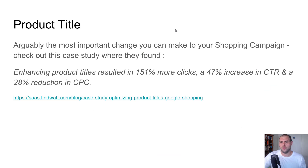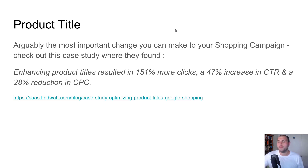Next is the product title — this is so important. It's arguably the most important change you can make to your shopping campaign. I just read through a case study where they found enhancing product titles resulted in 151% more clicks, a 47% increase in CTR, and a 28% reduction in CPC. This was a really big agency that runs Google Shopping campaigns, and this is what they found through heavy testing — making sure their product titles were optimized resulted in these amazingly improved results.